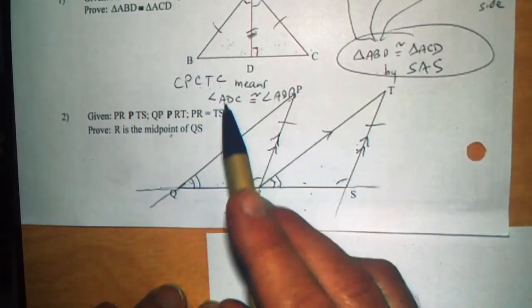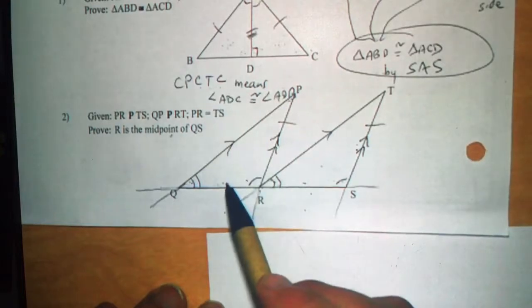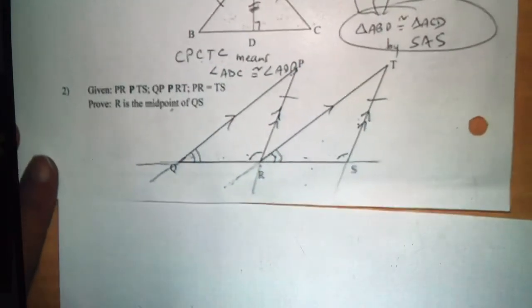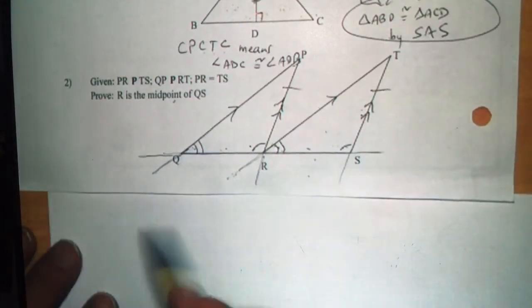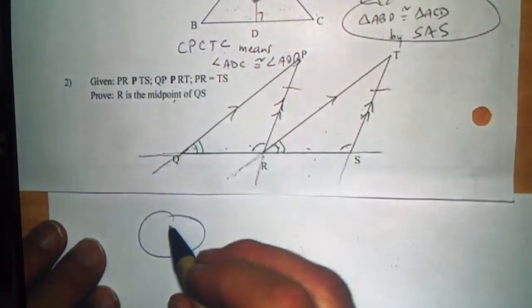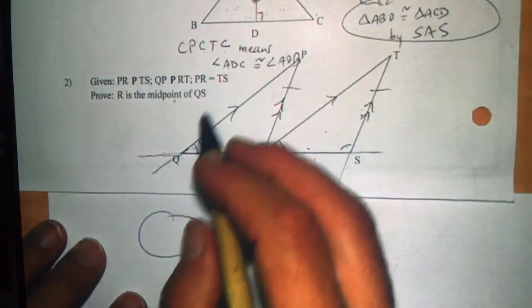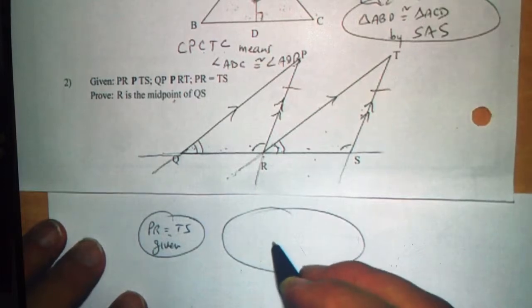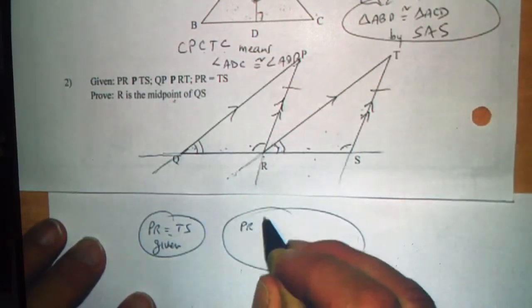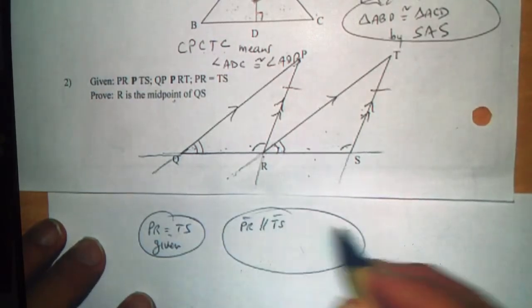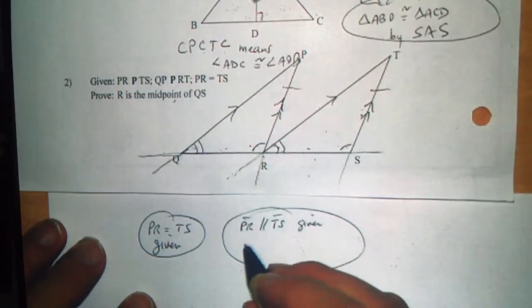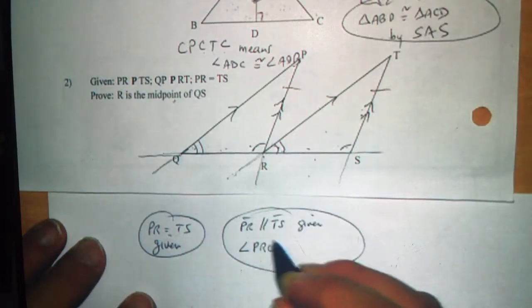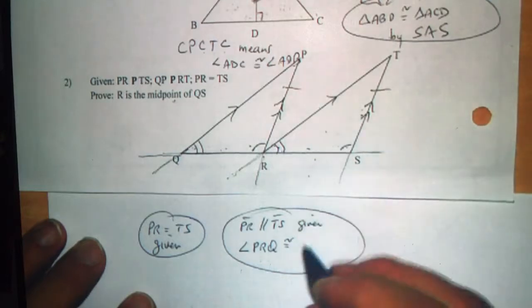And because they're congruent, we can say by CPCTC — corresponding parts of congruent triangles are congruent — that QR equals RS. Now all of that has to be written into a proof. So we'll use the bubble proof. We'll start with PR equals TS, given. Then, because PR is parallel to TS, we can say that angle PRQ is congruent to angle TSR.